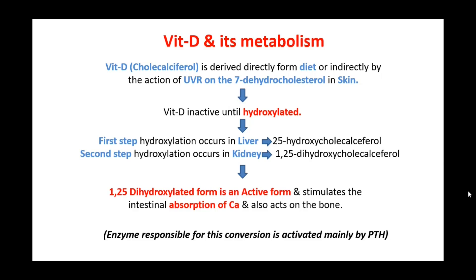The first step of hydroxylation takes place in the liver, converting cholecalciferol into 25-hydroxycholecalciferol. The second step of hydroxylation occurs in the kidney, converting 25-hydroxycholecalciferol into 1,25-dihydroxycholecalciferol. This 1,25-dihydroxylated form is the active form of vitamin D, which stimulates intestinal absorption of calcium and also acts on the bones.